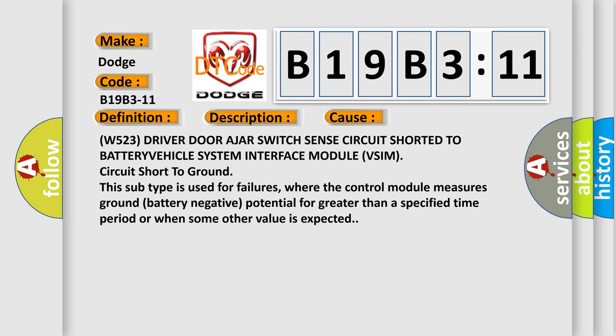W523 driver door ajar switch sense circuit shorted to battery/vehicle system interface module VSIM circuit short to ground. This subtype is used for failures where the control module measures ground battery negative potential for greater than a specified time period or when some other value is expected.